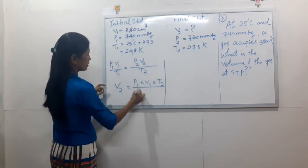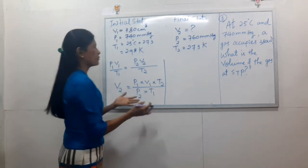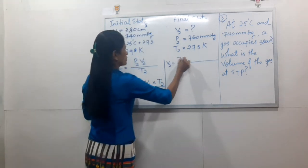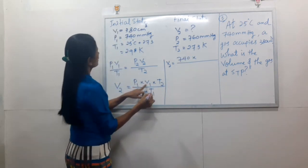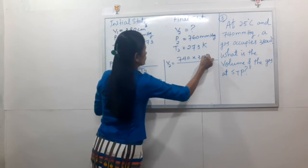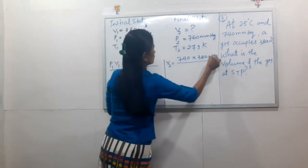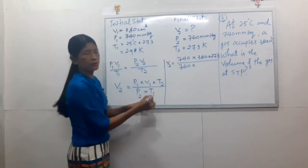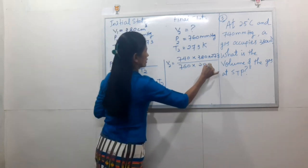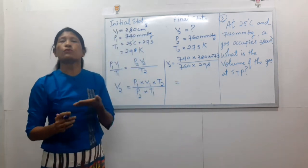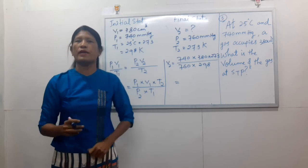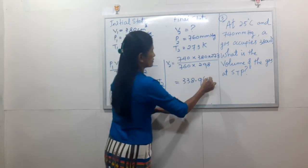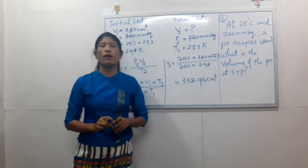Now P1 is equal to 740, V1 is 380. So: V2 equals (740 times 380 times 273) divided by (760 times 298). Use these values to fill in and calculate.